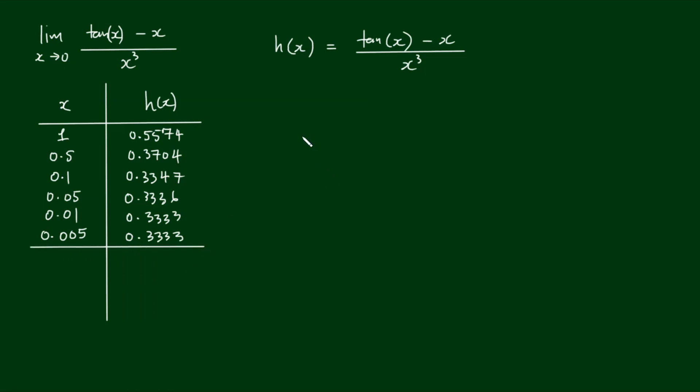So we might guess that the limit as x approaches 0 of tan x minus x divided by x cubed is equal to 1 third, because 0.3333 is 1 third as a fraction. But is this really what the answer is?